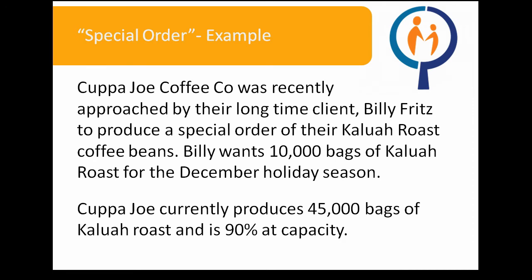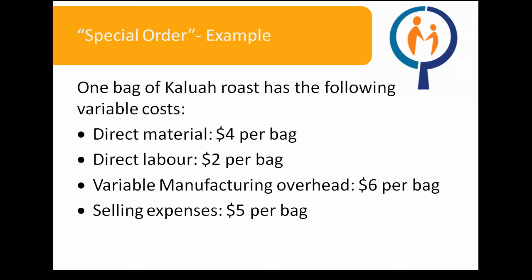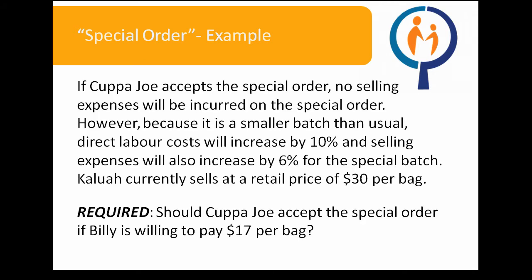Let's try an example. Cup of Joe Coffee Co. was recently approached by their long-time client, Billy Fritz, to produce a special order of their Kahlua Roast coffee beans. Billy wants 10,000 bags of Kahlua Roast for the December holiday season. Cup of Joe currently produces 45,000 bags of Kahlua Roast and is 90% at capacity. One bag of Kahlua Roast has the following variable costs: direct material of $4 per bag, direct labor of $2 per bag, variable manufacturing overhead of $6 per bag, and selling expenses of $5 per bag. If Cup of Joe accepts the special order, no selling expenses will be incurred. However, because it is a smaller batch than usual, direct labor costs will increase by 10%. Kahlua Roast currently sells at a retail price of $30 per bag. Should Cup of Joe accept the special order if Billy is willing to pay $17 per bag?